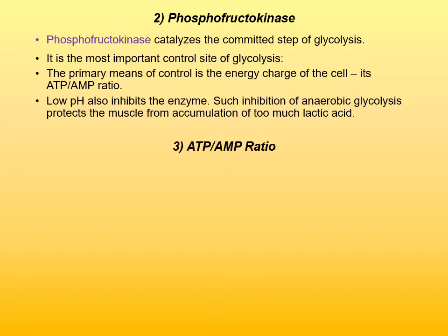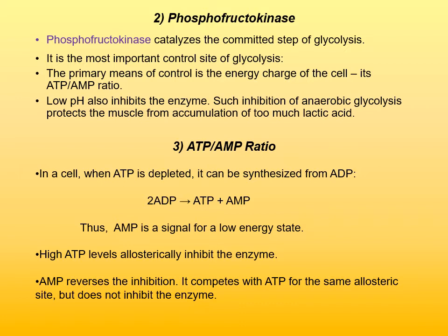The ATP-to-AMP ratio, or energy charge of the cell, is a very important way to regulate phosphofructokinase and, in turn, glycolysis. In a cell, when ATP is depleted and energy runs low, additional ATP can be synthesized by what we call disproportionation of ADP. Two molecules of ADP are disproportionated — one molecule of inorganic phosphate is transferred from one molecule of ADP to another — resulting in generation of one molecule of ATP and one molecule of AMP. This ATP can then be used to satisfy energy needs of the cell. But now a molecule of adenosine monophosphate, or AMP, has appeared, and when it appears, this is a signal that the cell is in a low energy state and needs energy.